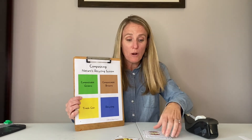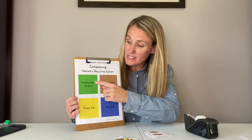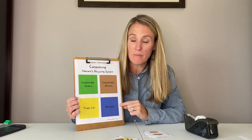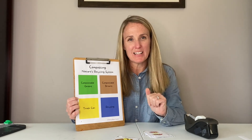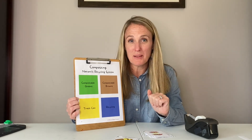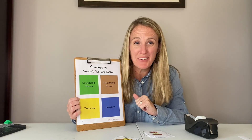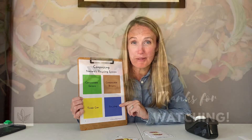Even though potatoes aren't green when they're ready to eat, they do have a high moisture content, making them a good nitrogen source and a great compostable green. Go through all 18 cards, sort them into their respective areas, and then use the answer sheet to check how you did. If you have any questions, let me know, and have fun sorting out your compostables!